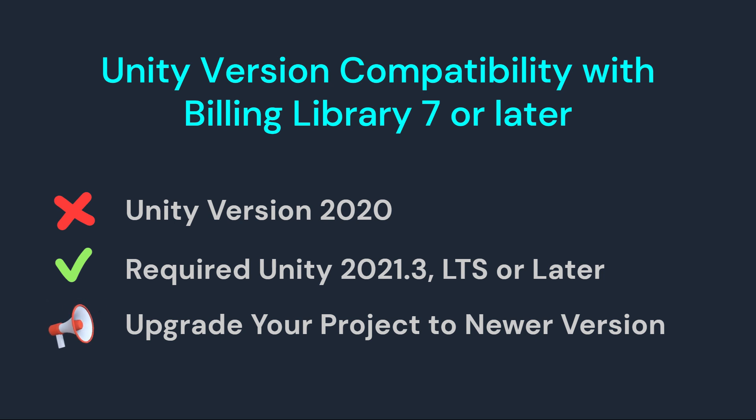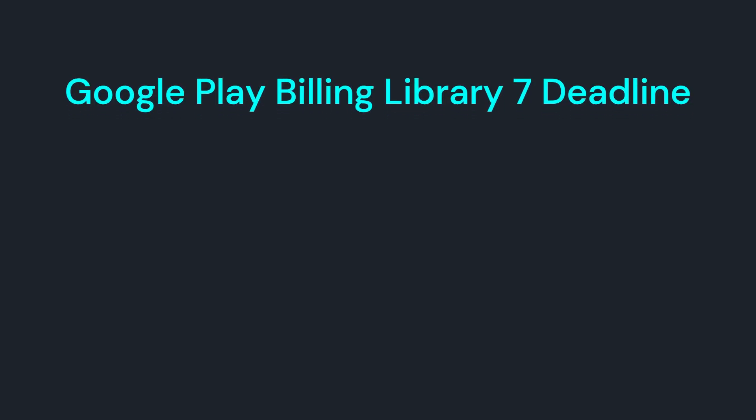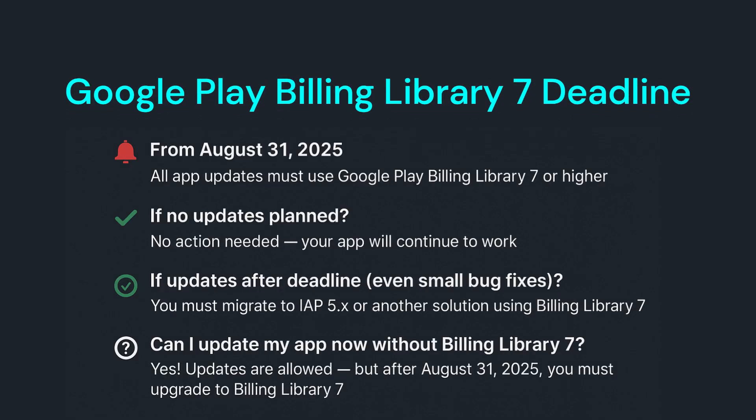So if your project is still on Unity 2020, you'd have to upgrade your Unity version first. Regarding the deadline: Google Play has announced that from August 31st, 2025, any app updates you submit must use Billing Library 7 or higher.